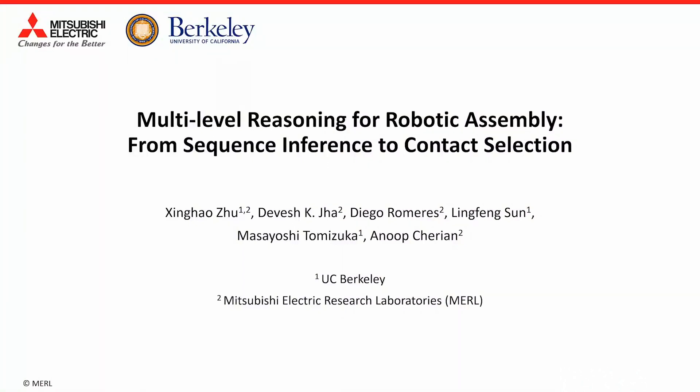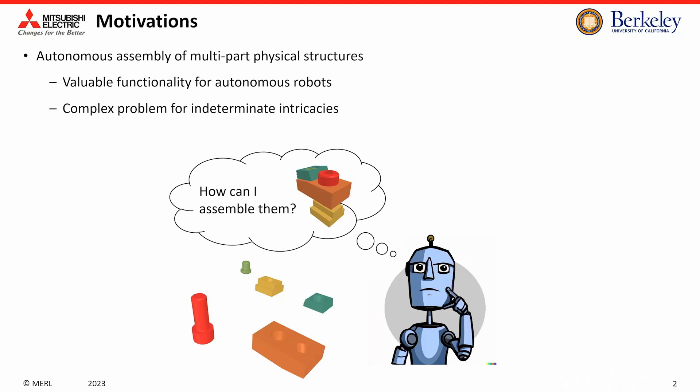Hello, this is the supplementary video for our paper on multi-level reasoning for robotic assembly from sequence inference to contact selection. The assembly of parts in accordance with a target blueprint presents a compelling research challenge in the domains of robotics and machine learning. This task not only presents a highly valuable functionality that autonomous robots can perform, but it is also a complex problem for embodied intelligence.